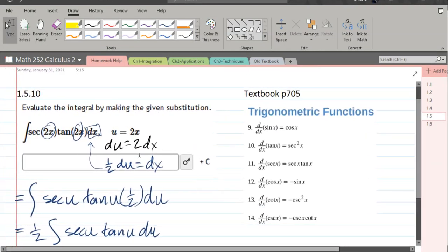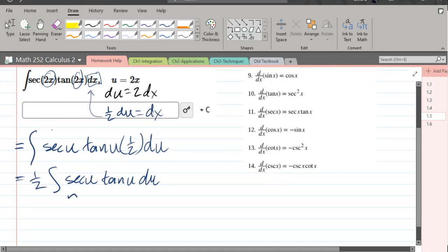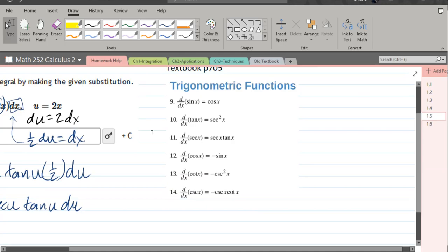So we want to know what function has a derivative of secant tangent. So over here, I want to look on the right side, and I want to find secant tangent. So boom, it's right there. And I'm going to rewrite it with some u's.